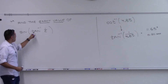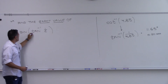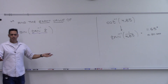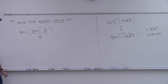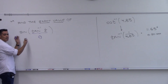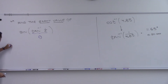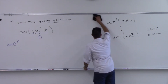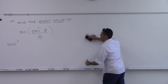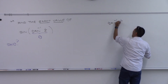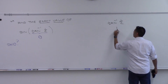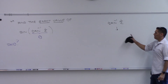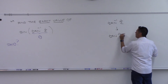Does everybody agree that when I say tangent inverse of a number, that answer is an angle? When you plug a number into the inverse tangent, it gives you back the angle. So this is some angle θ. Ultimately, I'm asking you to find sine of θ. Tangent inverse of 1/2 really means tangent of some angle equals 1/2.